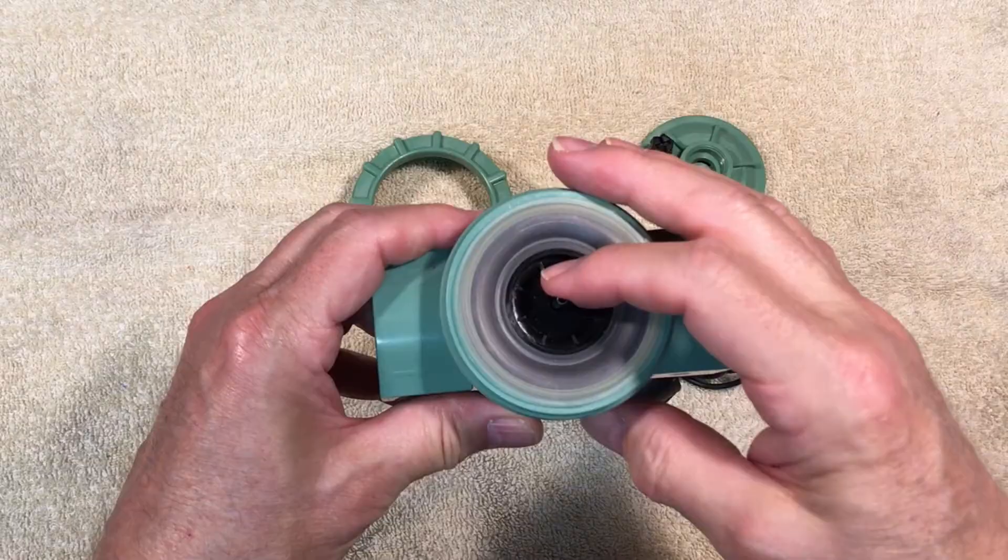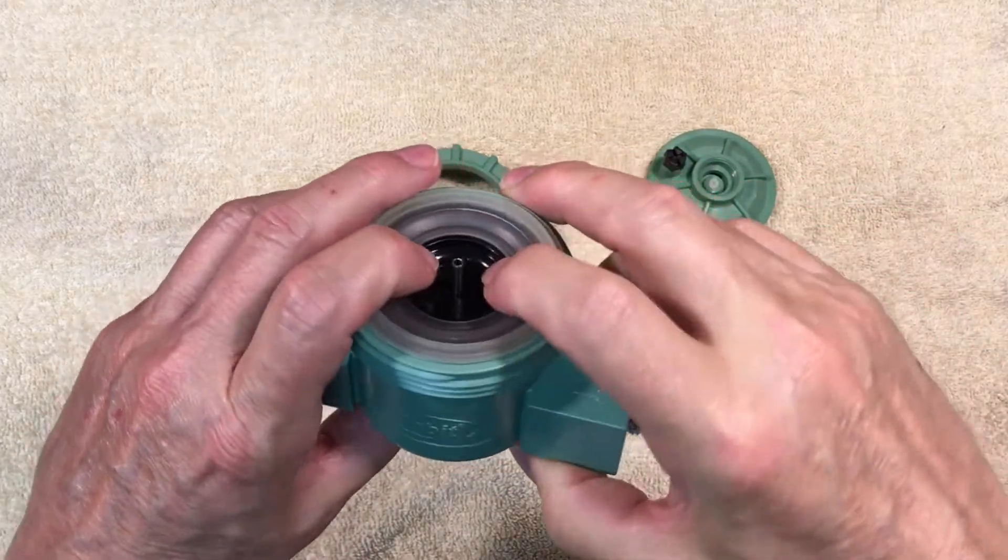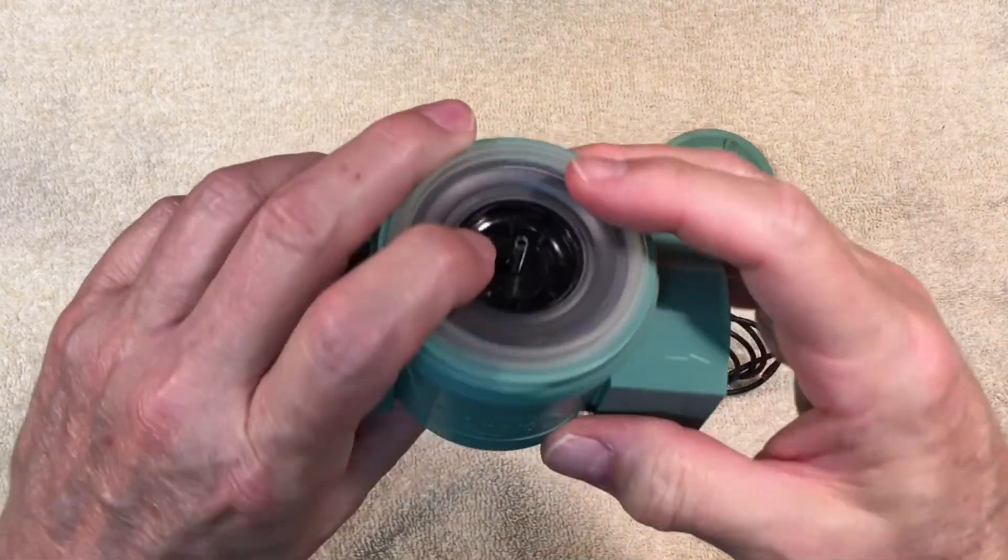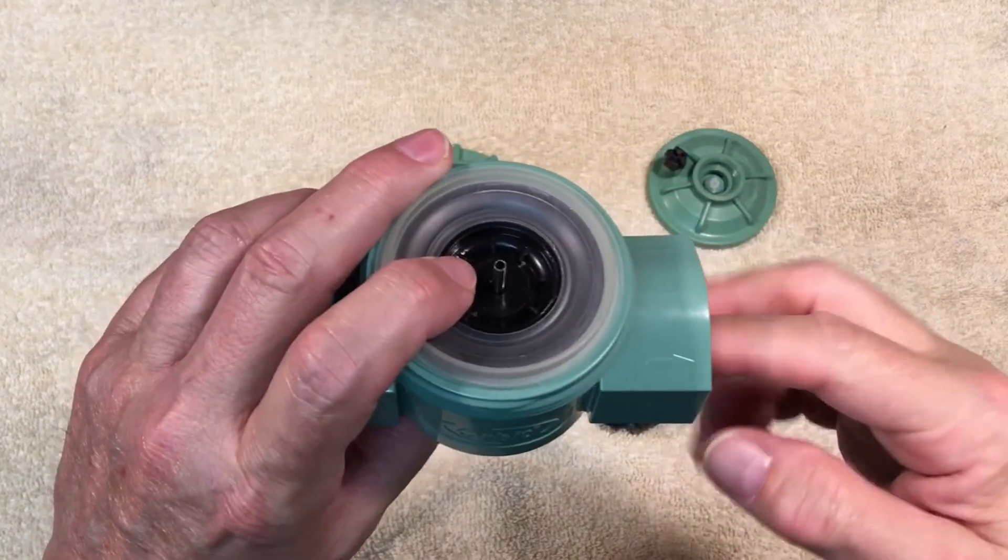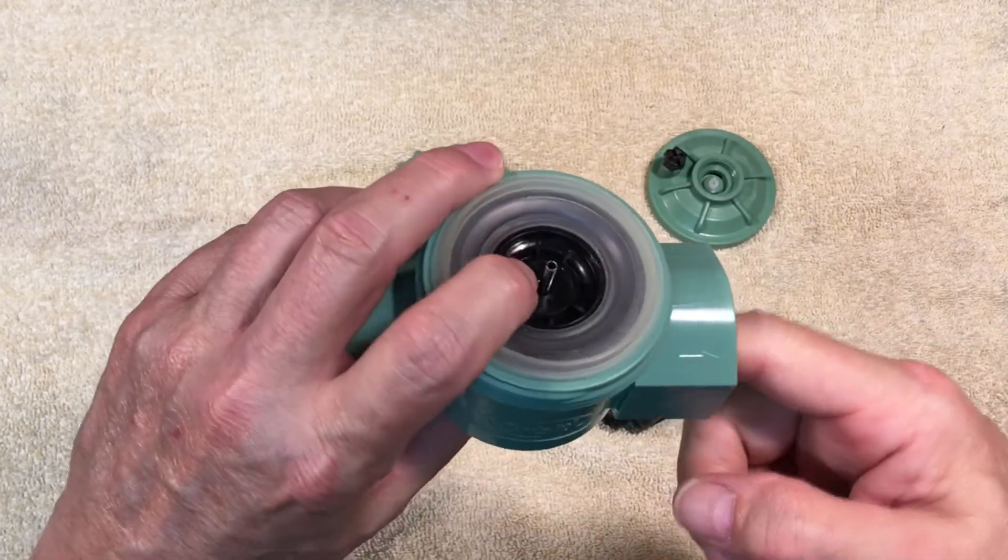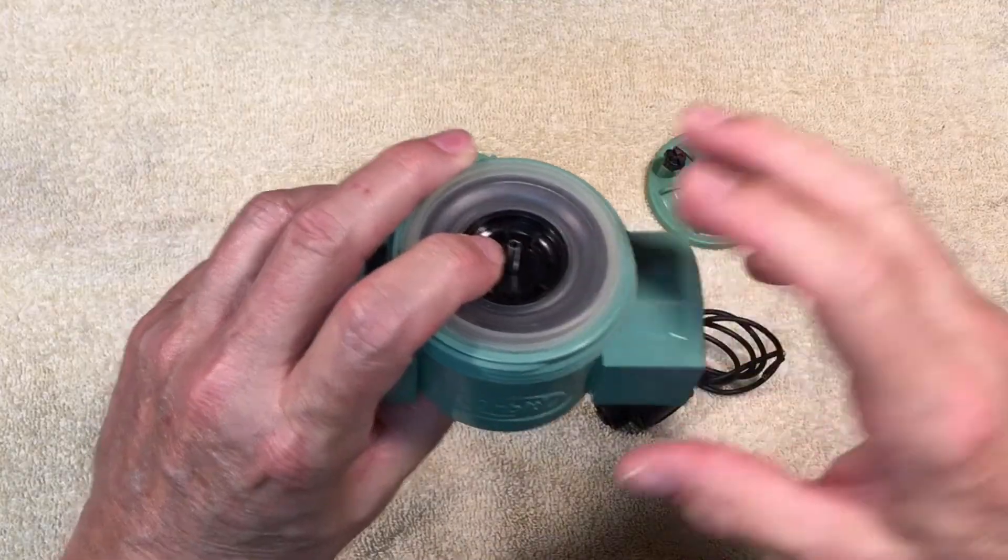But this can only happen when the solenoid is energized and the solenoid plunger is pulled away from the top of the stainless steel tube. Otherwise, the plunger blocks the top of the tube, keeping water from flowing into it.